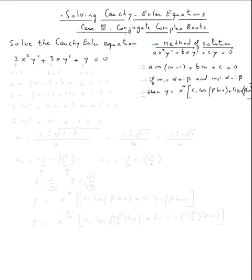The method of solution is right there. If you have ax²y″ + bxy′ + cy = 0, the Cauchy-Euler equation, then the characteristic equation is am(m-1) + bm + c = 0.